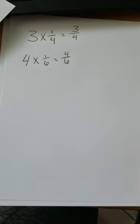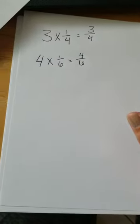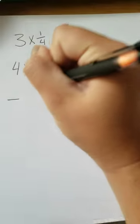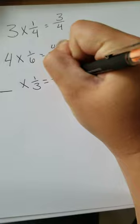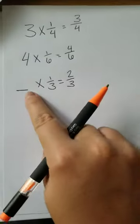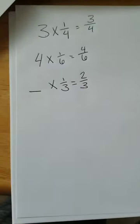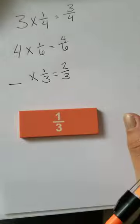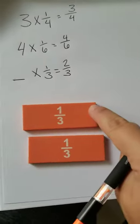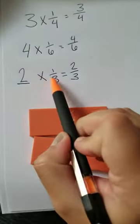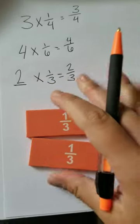Now, they might try to trick you in some of these problems that you're going to see later this week. They might give you blank times 1 third equals 2 thirds. So I need to figure out what that whole number is. So if I take my 1 third manipulatives, I need to figure out how many groups do I need to make 2 thirds. 1 group, 2 groups. I need 2 groups to make 2 thirds. So 2 times 1 third equals 2 thirds.